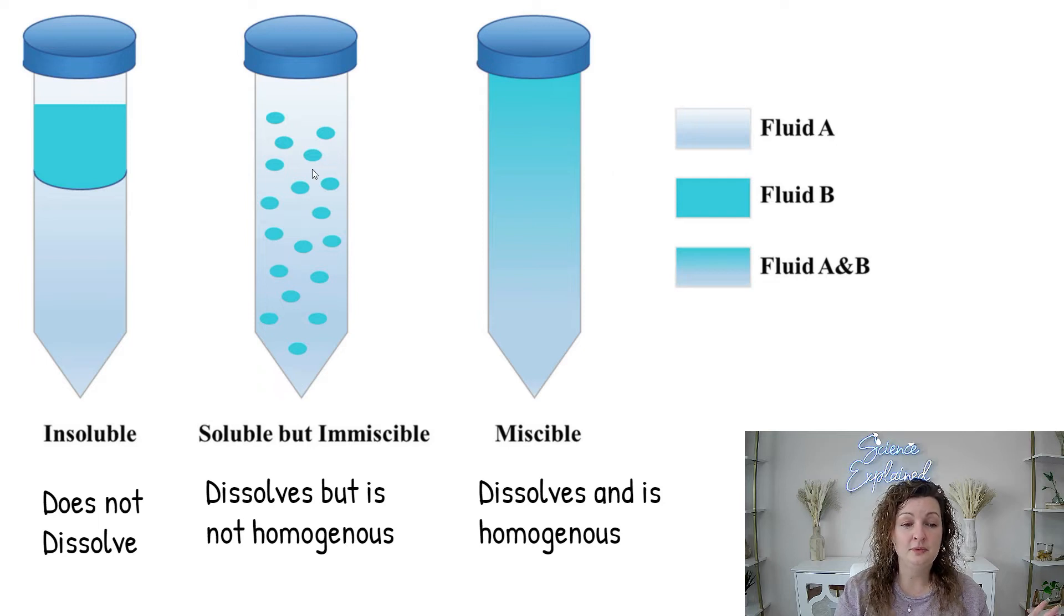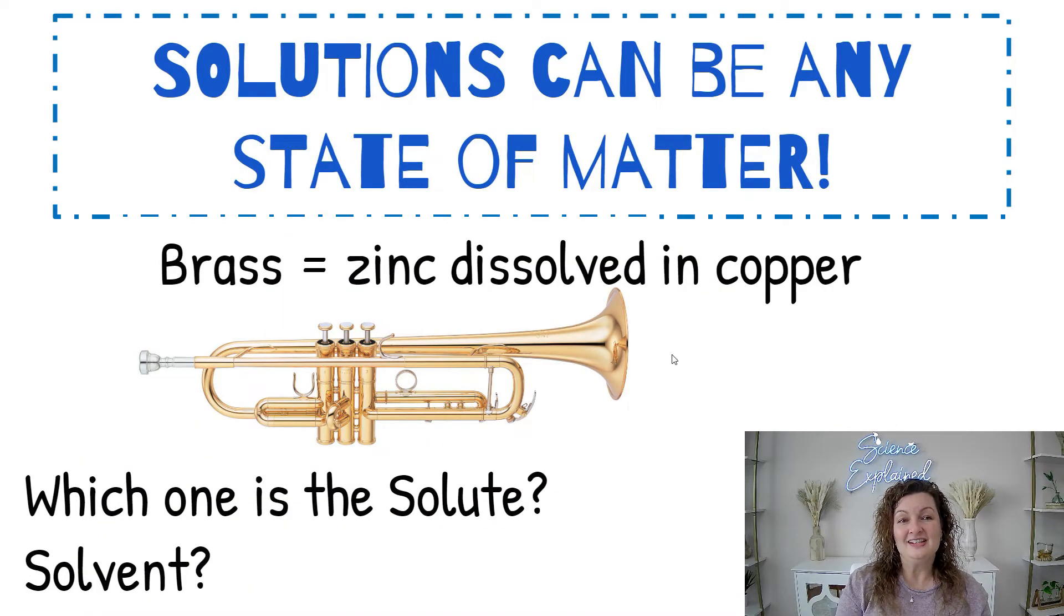Here's some examples to reflect upon. This one is miscible and also soluble. It will dissolve and it's homogeneous. In the middle, we have this gray zone. This is soluble but immiscible because it's dissolving, but it's not homogeneous. We can clearly see different areas that are not uniform. Over here we have insoluble, which means it does not dissolve at all. They're clearly separated layers, like oil and water.